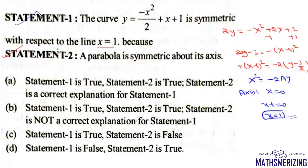Both statements are correct and statement 2 explains statement 1. So that's option number A. And that's how you look at the properties.